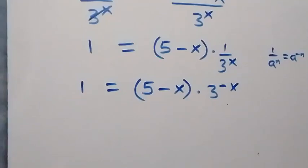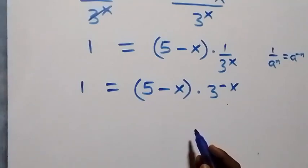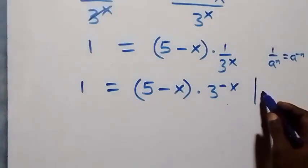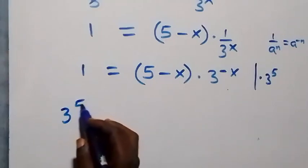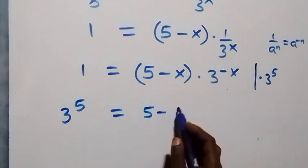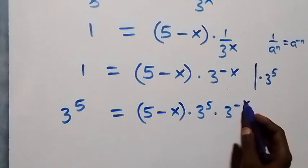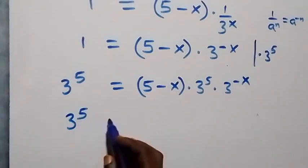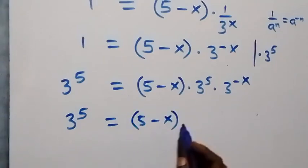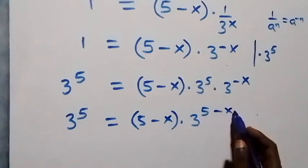Let's make the power here also be five minus x. We multiply both sides by three raised to power five, so three raised to power five equals five minus x. From what we have here, we still have three raised to power five equals five minus x in brackets, times three raised to power — when we have these powers together from the law of indices — five minus x.